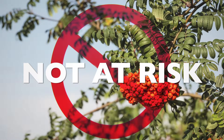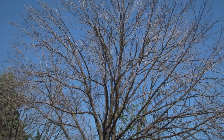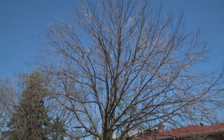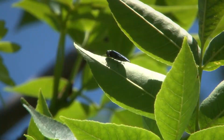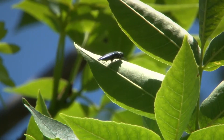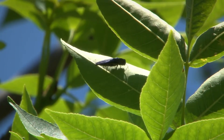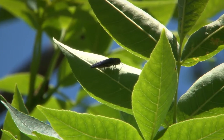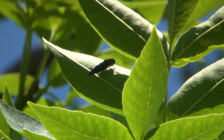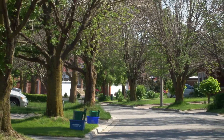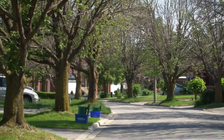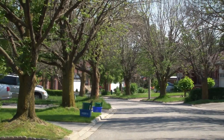The damage caused to trees by this small, shiny green Emerald Ash Borer is staggering. This tiny beetle is a very invasive pest. It was transported into Canada from another country, likely on firewood or packaging. In Canada, EAB has no natural predators and lots of ash trees to thrive on. It has already killed upwards of 100 million trees in the United States since its detection.